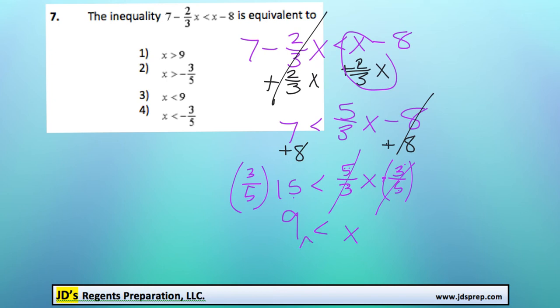And then if we're going to reverse the order of this inequality, it would be x is greater than 9, which is option number 1.